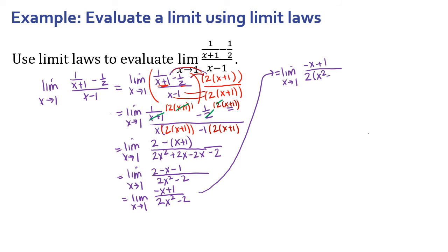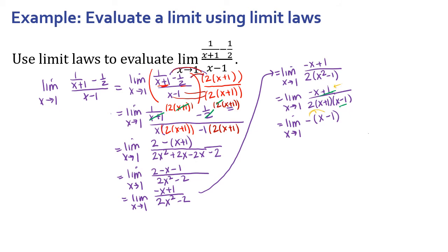The denominator factors into 2 times x squared minus 1, which gives us 2 times x plus 1 times x minus 1. So we have negative x plus 1 over 2 times x plus 1 times x minus 1. These look eerily similar except they're flipped. So I can factor a negative 1 out of the numerator: negative x divided by negative 1 is positive x, and positive 1 divided by negative 1 is negative 1, giving us negative 1 times the quantity x minus 1. Now x minus 1 cancels with x minus 1 in the denominator, which was causing all the problems when substituting x equals 1.